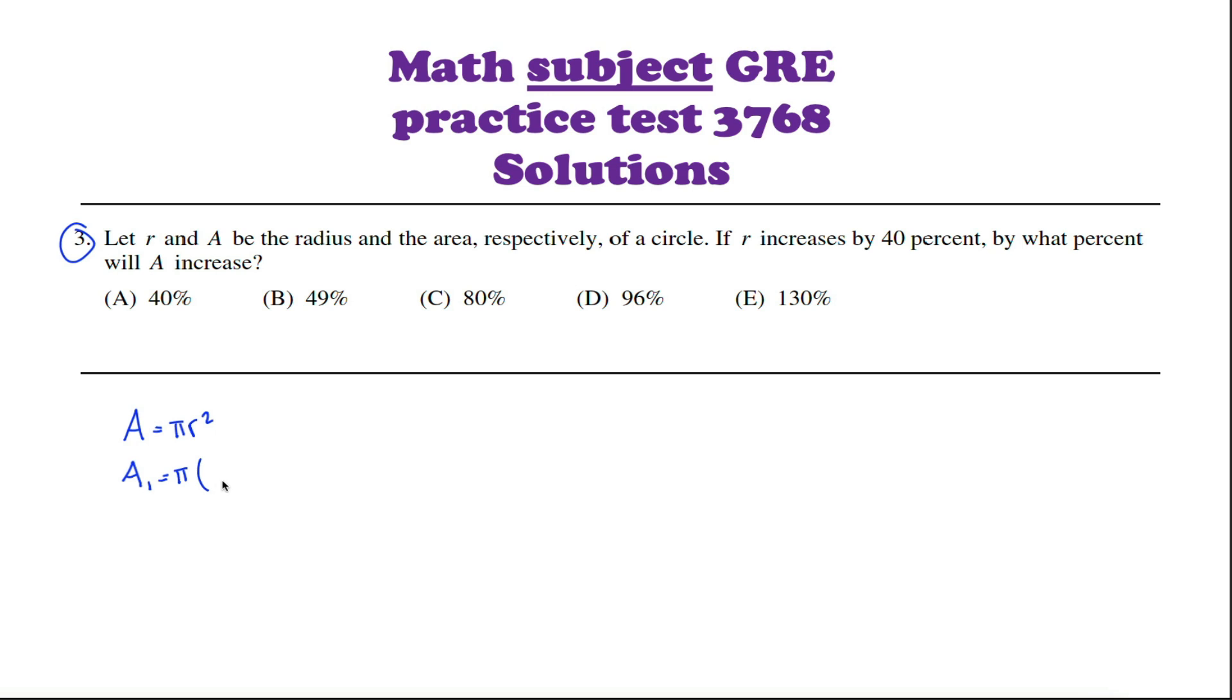But instead of writing like R1 squared, we know that the new radius is 40% bigger than the old radius. So we could write 1.4 times R, the old radius. Simplifying this a little bit, 1.4 squared, let's see, 14 times 14 is 196. So I guess this would be 1.96 R squared. In other words, 1.96 pi R squared.